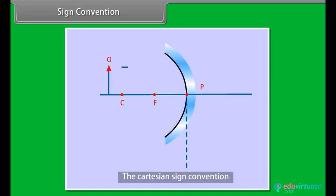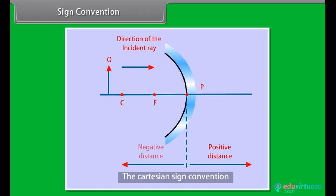Sign Convention: Distances measured in the direction of the incident ray are taken to be positive, and those measured in the opposite direction are taken to be negative. Heights measured upwards are taken to be positive, and those measured downwards are taken to be negative.